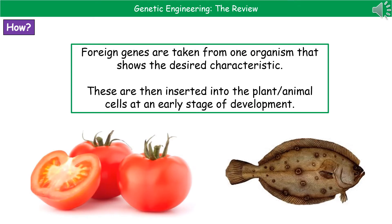When it comes to understanding how we carry out this process of genetic engineering, the first thing we need to do is identify our desired characteristic. What we then do is take those foreign genes from one organism that shows that characteristic, and then insert them into the plant or animal that we want to show this characteristic at a really early stage of development. A good example of where we've done this is in tomatoes.